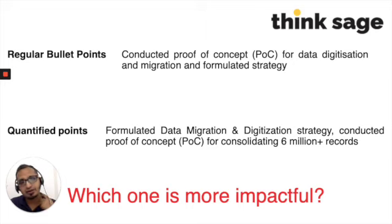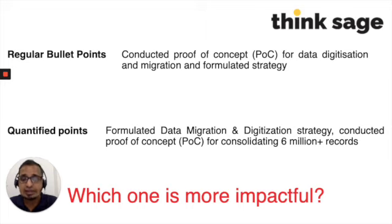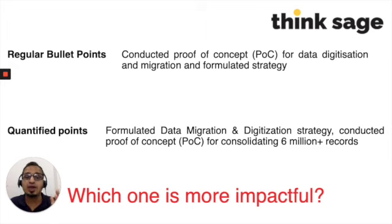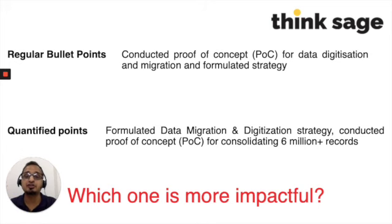This third example is specifically for people who have worked on projects. It says you conducted a proof of concept — but then what happened? If you conducted a proof of concept migrating just a thousand data points, it's not a big deal. But when you say you formulated a strategy and conducted a proof of concept for consolidating six million plus records, that is a problem being solved at scale. Digitizing 60 lakh records requires a lot of coordination, project management, and skills that someone digitizing only a thousand records would not have.